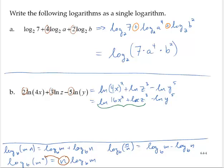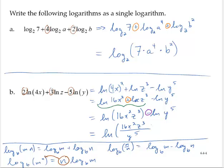Simplifying the first part — natural log of 16x squared plus the natural log of z to the third — and using the fact that there's an addition there, I have the natural log of 16x squared z cubed minus the natural log of y to the fifth. And finally, using the subtraction, I can rewrite that using a division: the natural log of 16x squared z cubed over y to the fifth.